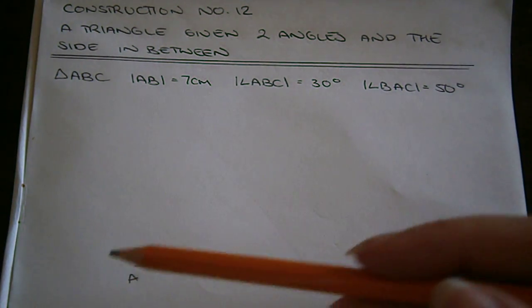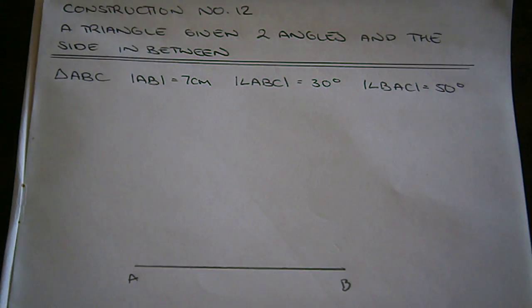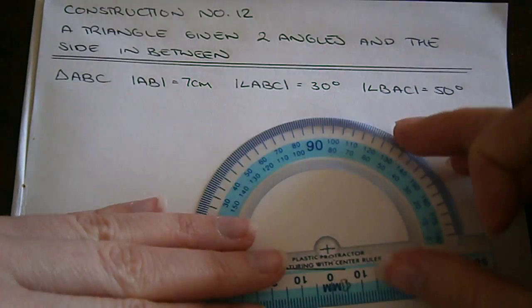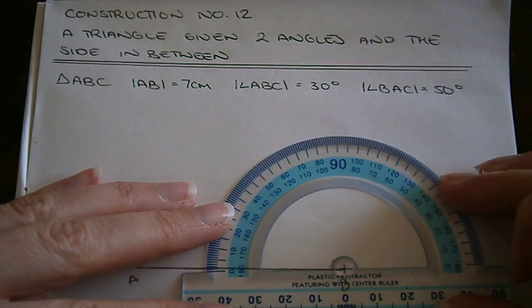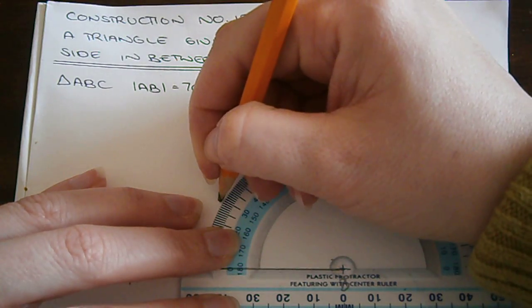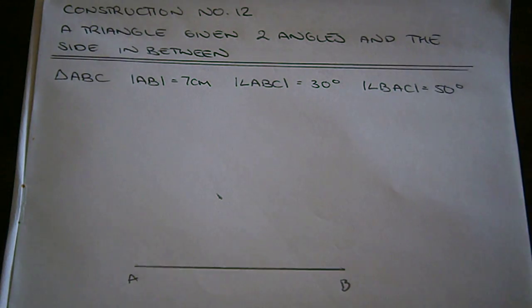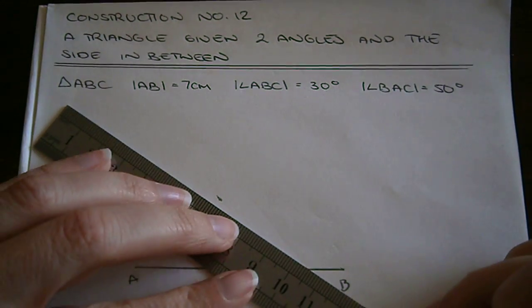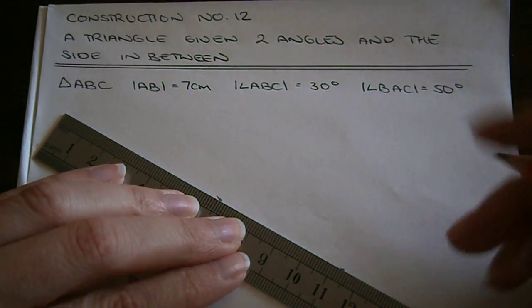So the angle AB and C to be up here will be 30 degrees. So placing our protractor on B and lining it up, we have our 30 degrees. So we'll first draw a construction line from B towards C.